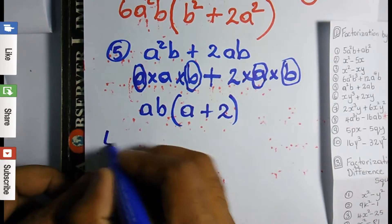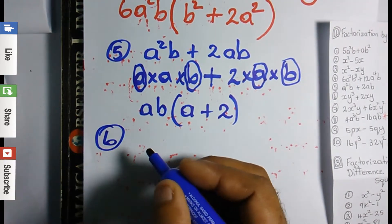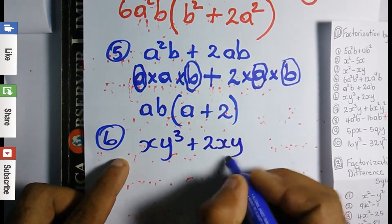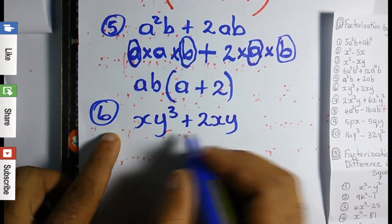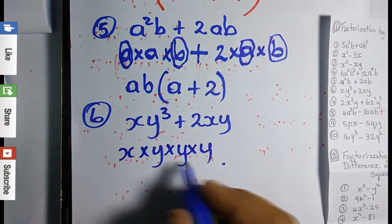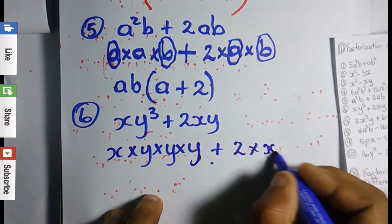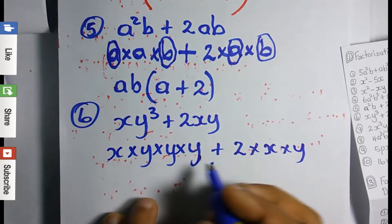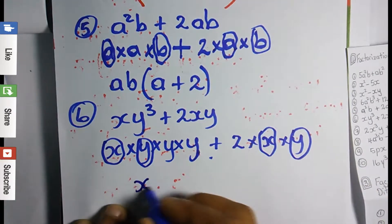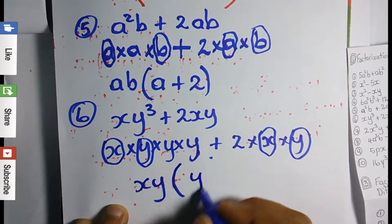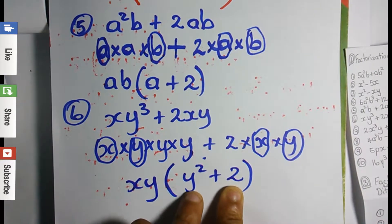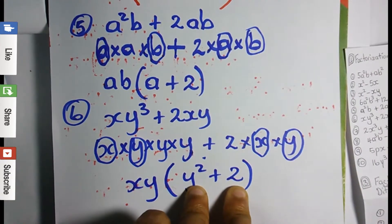Question 6: we have xy³ + 2xy. Expanding: x times y times y times y times y, plus 2 times x times y. Looking at both sides, x and y are common, so xy is the common factor. Open a bracket: what's left is y times y, which is y², plus 2. The answer is xy(y² + 2). After factorizing, there should be nothing common remaining inside the bracket.